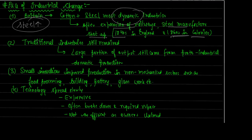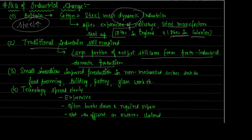The second point: did proto-industrial units shut down after factories arrived? No - traditional industries still remained. A large portion of the output - about 80% - still came from proto-industrial domestic production, not from factories or large manufacturing houses. It still came from small domestic industrial units. The third point: were there radical innovations in proto-industrial domestic units as well? Not as radical - only small innovations occurred, but these were still helpful in improving production.